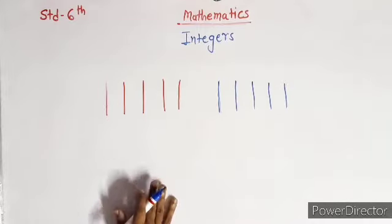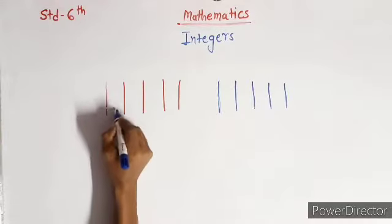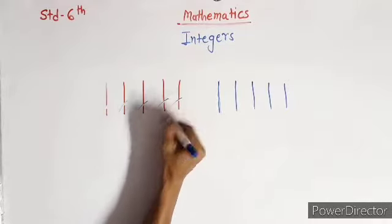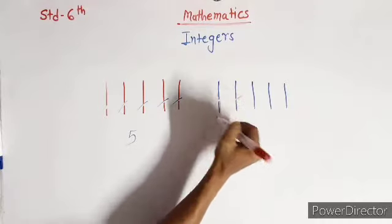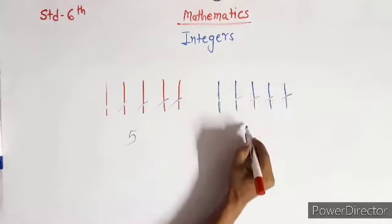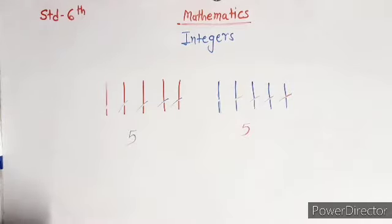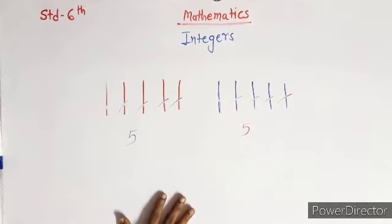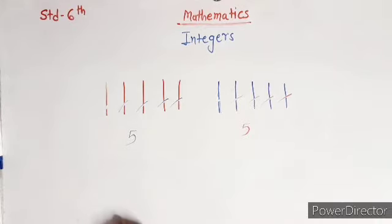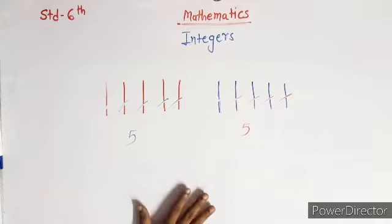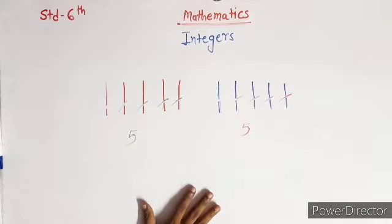So we count the lines: 1, 2, 3, 4, 5. There are 5 red lines, and 1, 2, 3, 4, 5 — also 5 blue lines. So we have to count objects in order 1, 2, 3, etc. to find out the answer. Numbers were created because of the need to count things in nature.